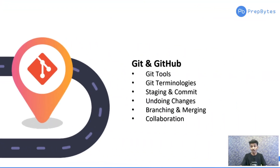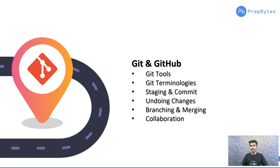Once you're done with build tools and package managers, you can move on to learning Git and GitHub. Git and GitHub serve two main functions. First, they allow you to collaborate with other developers — when working on a project as a team, you will be using Git. Second, they provide version control, which is basically like having a backup of your app in case something goes wrong.